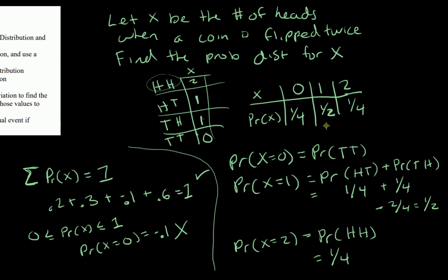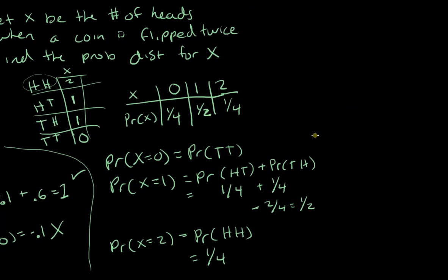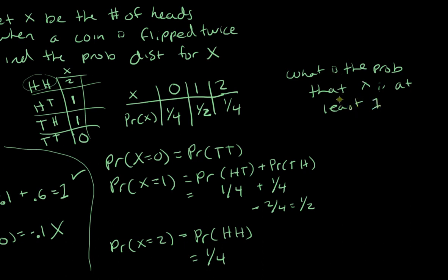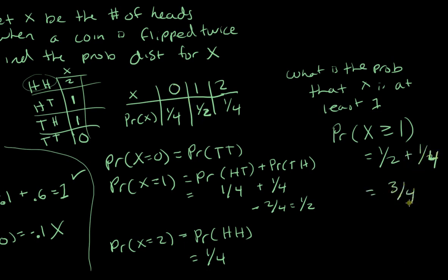For interpretation: what is the probability of getting at least one head? P(X ≥ 1) means P(X=1) + P(X=2) = 1/2 + 1/4 = 3/4. Alternatively, using the complement: 1 minus P(X=0) = 1 minus 1/4 = 3/4.